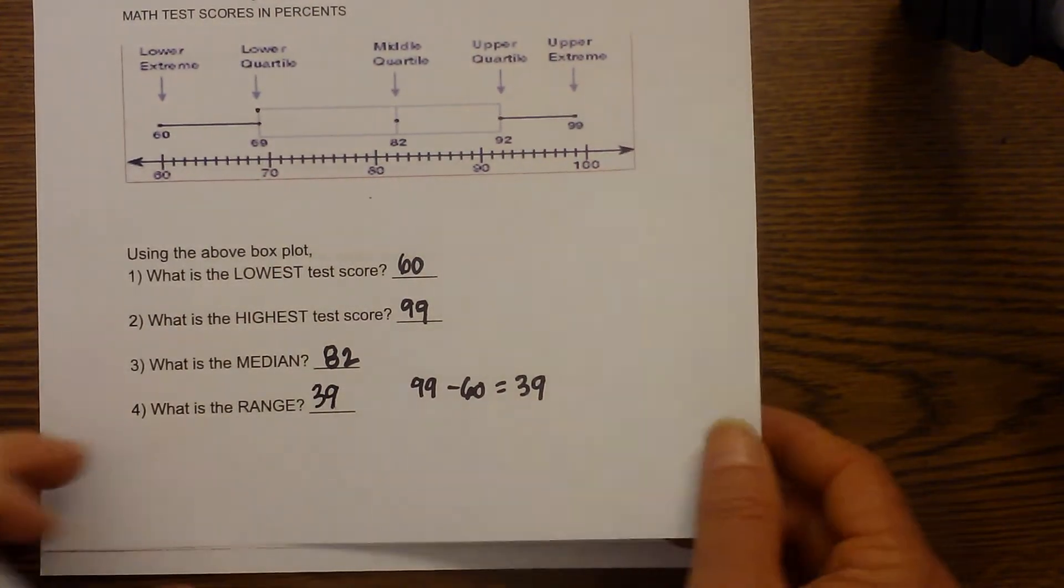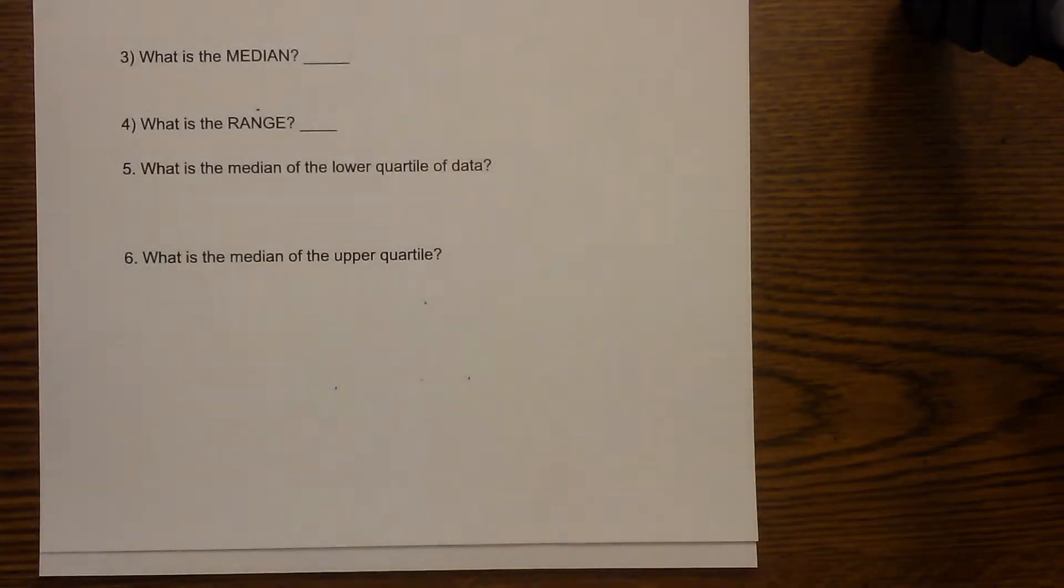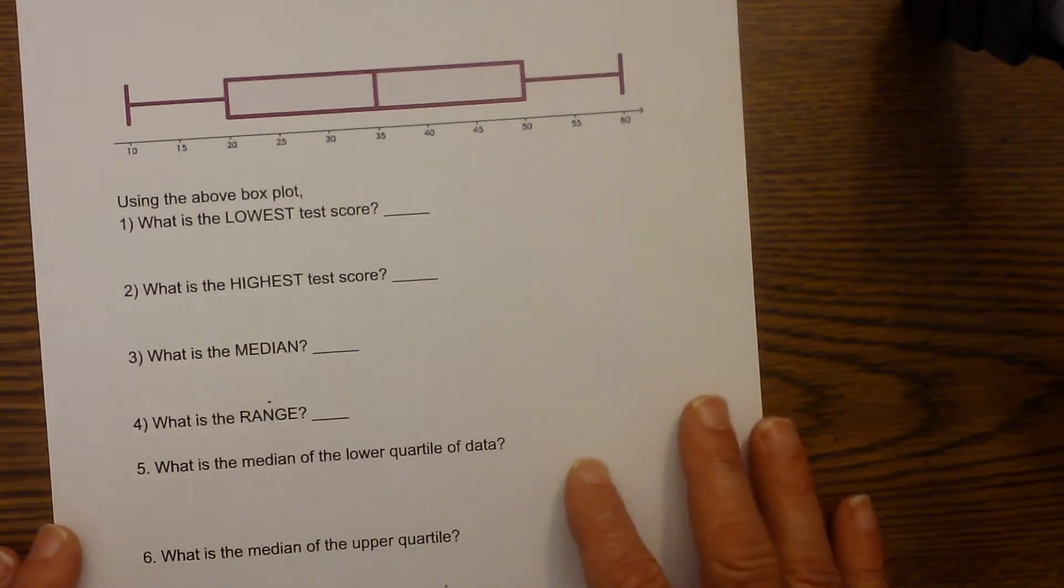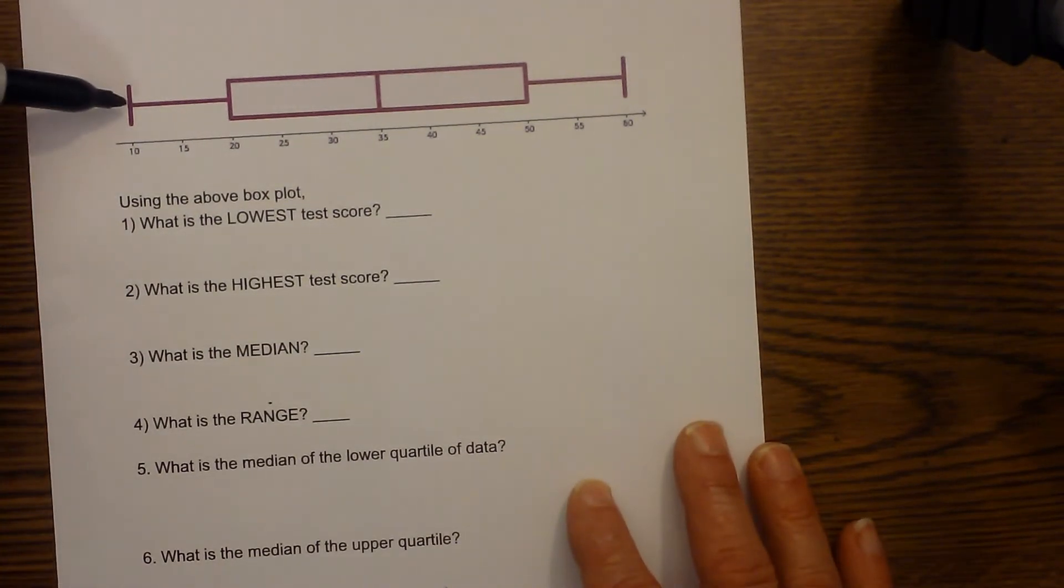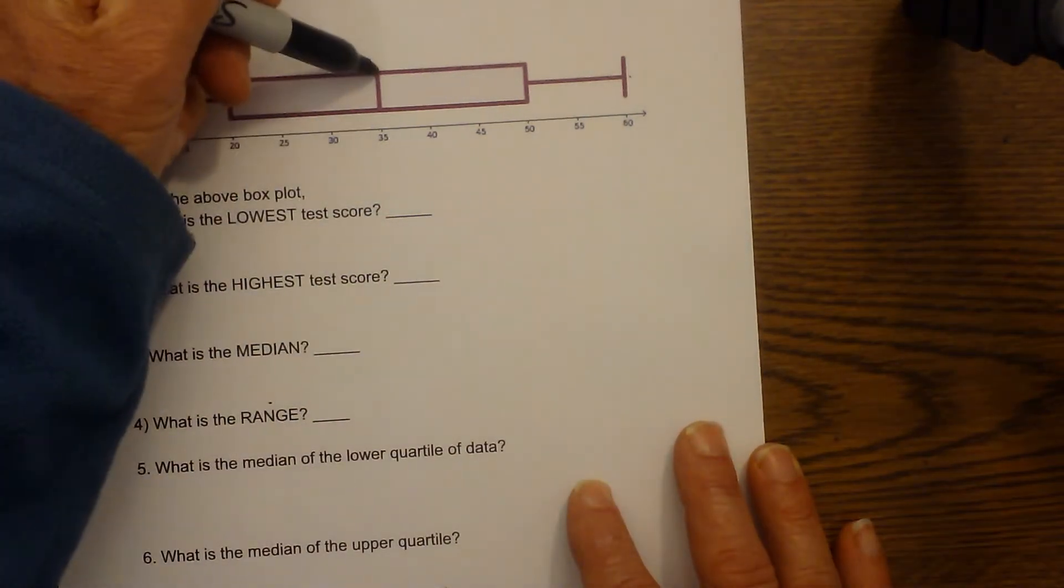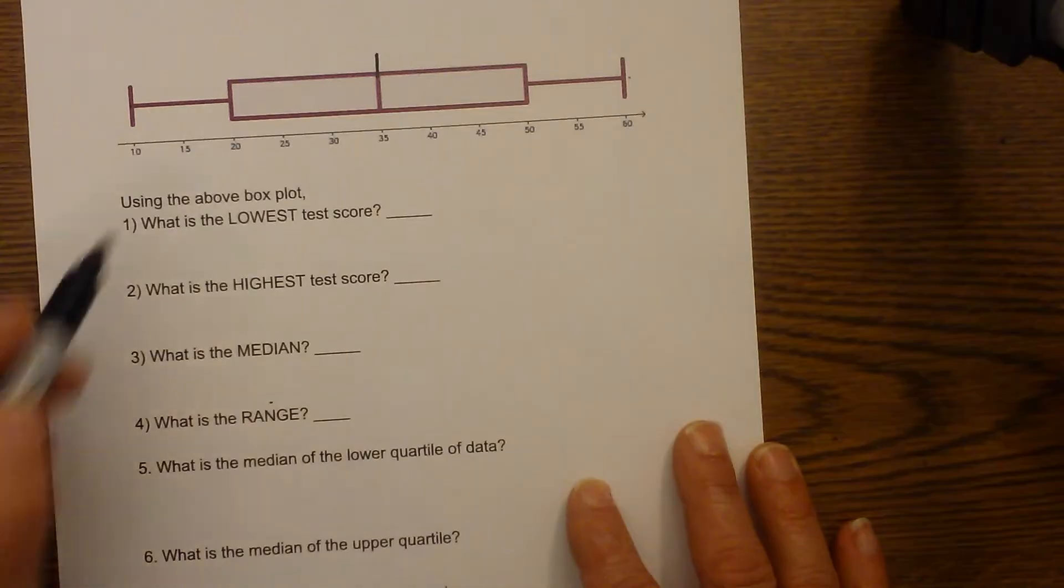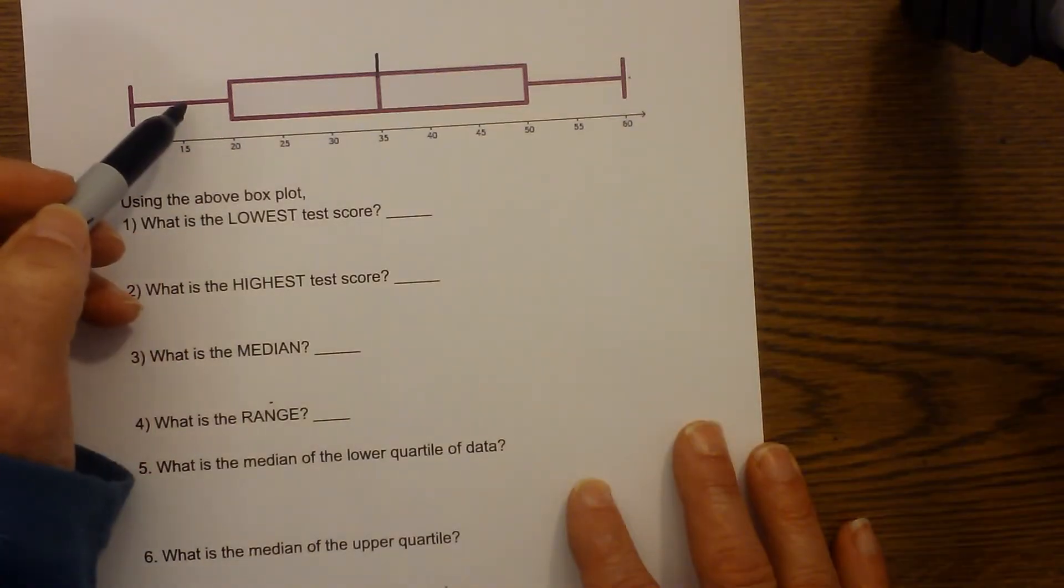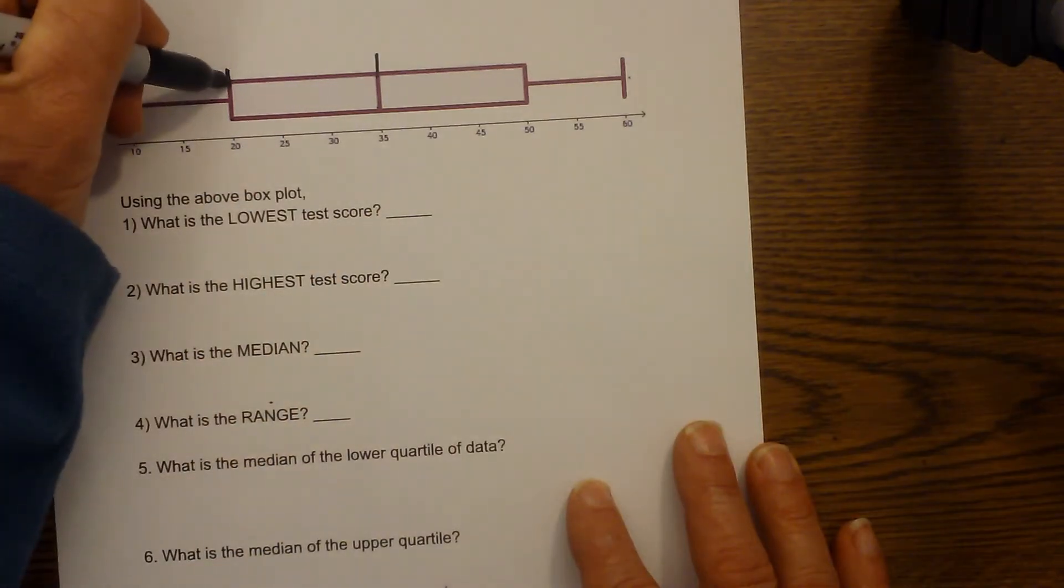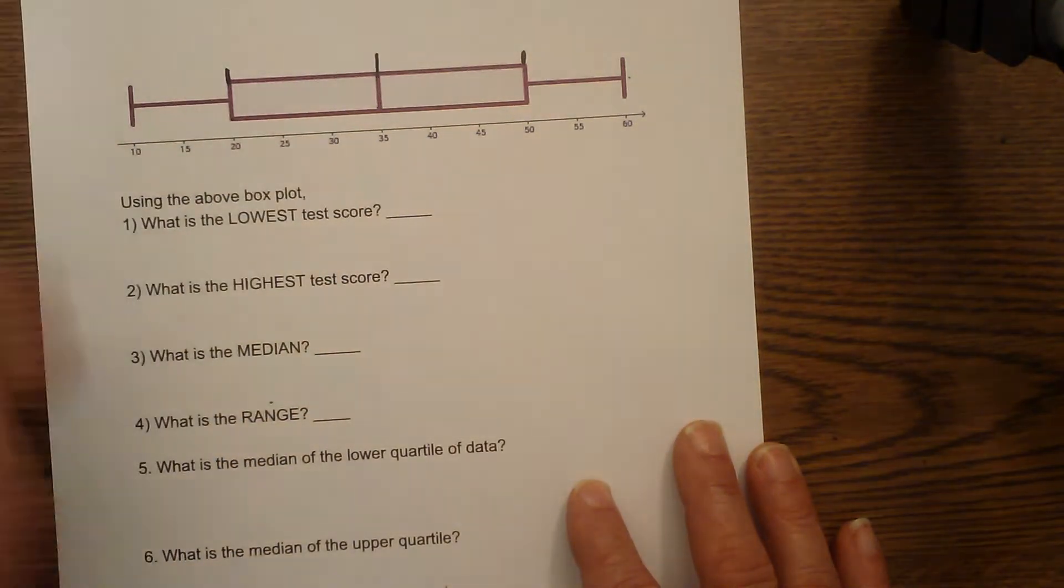Okay, let's look at another one and see if we can't do the same thing. Again, let's look at the numbers. We have the two extremes, we have the low extreme, the upper extreme. We have the median right here, which is 35. We have the lower quartile, which is the median of this lower set of data right here, and then the upper quartile.